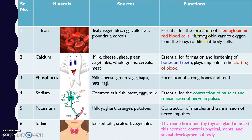Calcium is very important for our teeth and bones. It is found in milk, cheese, ghee, green vegetables, whole grains, cereals, and meat. Calcium is essential for the formation and hardening of bones and teeth. It also plays an important role in the clotting of blood — it helps heal wounds when we get injured by clotting the blood.